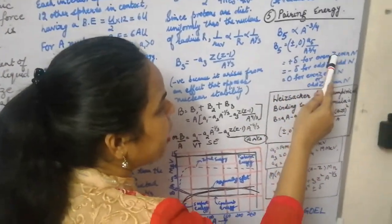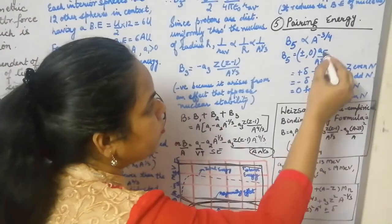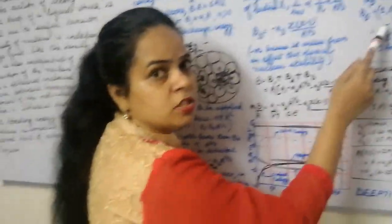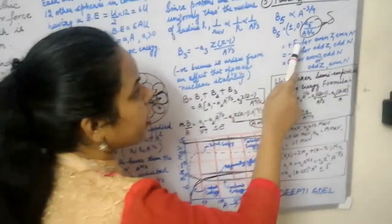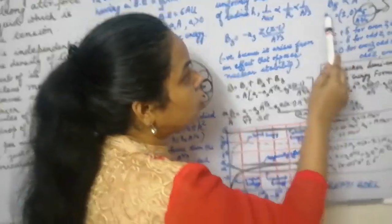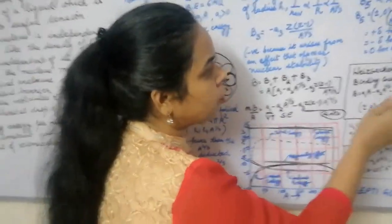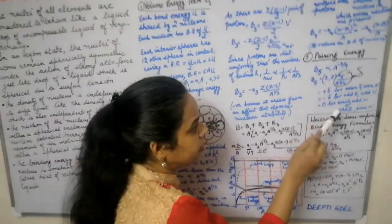The pairing term δ takes different values depending on the combination: for even proton and even neutron, δ is positive, since many stable nuclei exist and this adds to the binding energy. For odd proton and odd neutron, δ is negative, since very few stable nuclei exist, reducing binding energy. For even-odd or odd-even combinations (mixed), the binding energy contribution is zero. So the pairing energy term takes values of +δ, −δ, or 0.